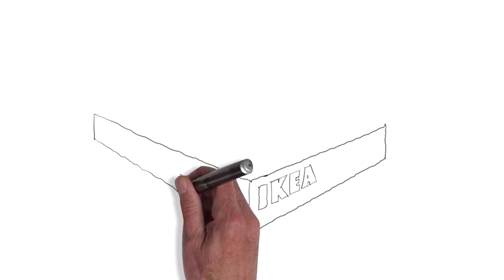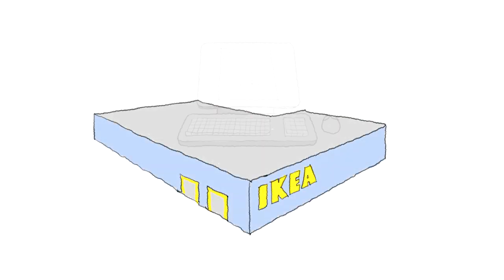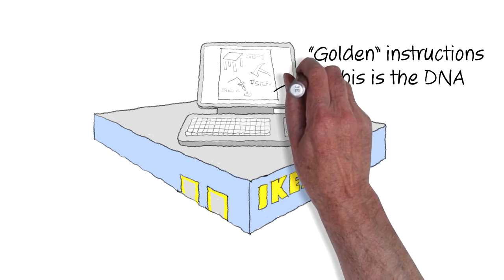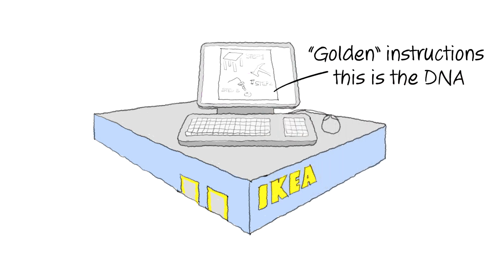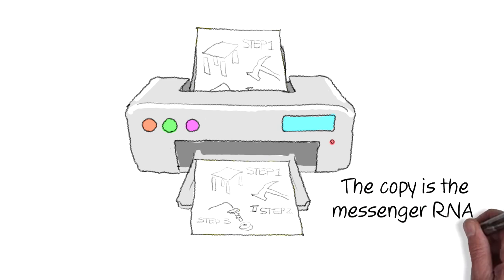It's rather like IKEA. In the factory are the golden instructions to enable all the different furniture to be assembled. This is the DNA. If you're getting a table, then just those instructions are copied and inserted in the packaging with the panels and screws. This is the messenger RNA.